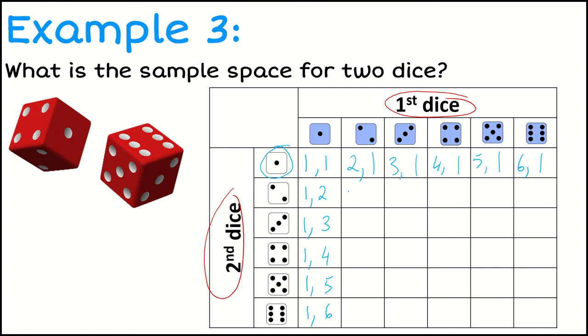And then I need to fill the entire table in, so I'm going to go across the next row and say, OK, well that would be getting a 2 on my first dice and a 2 on my second, a 3 on my first and a 2 on the second, a 4 on the first and a 2 on the second, 5 and 2, 6 and 2.